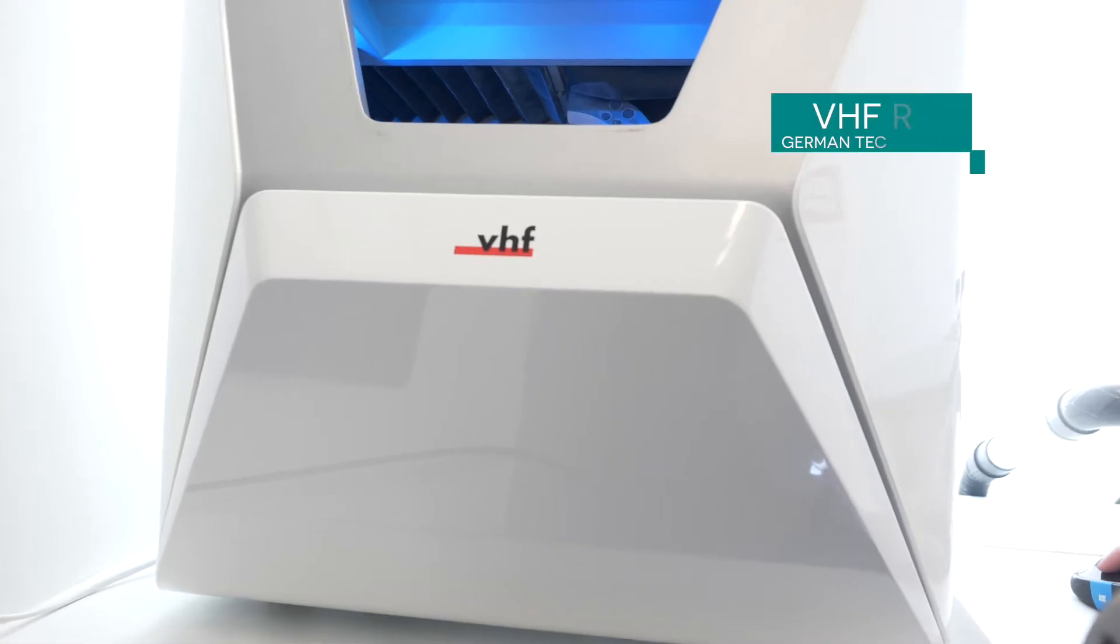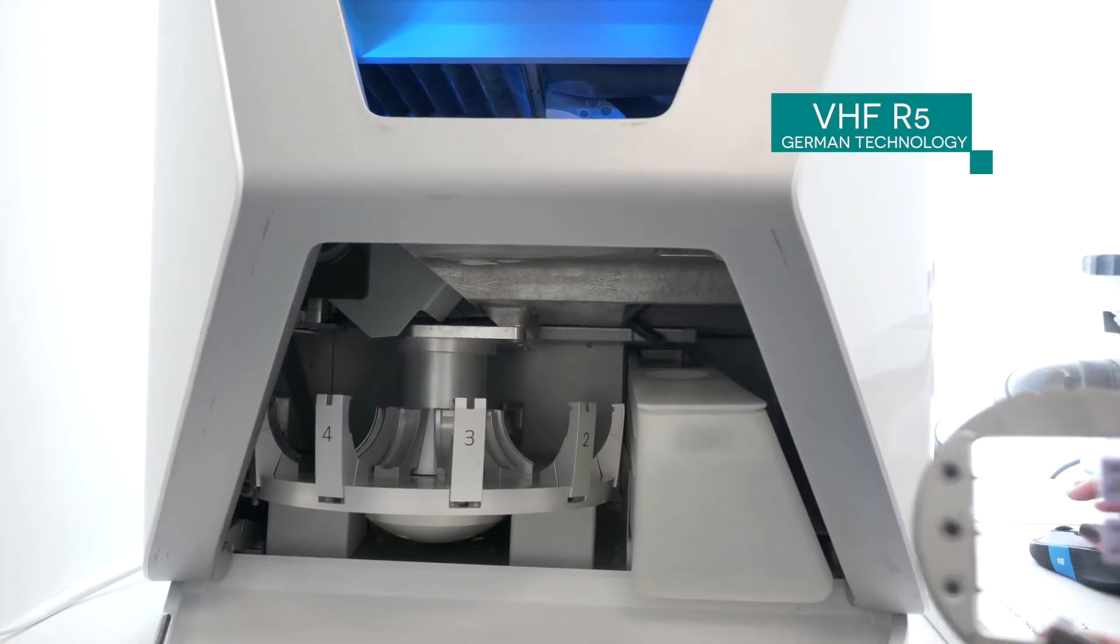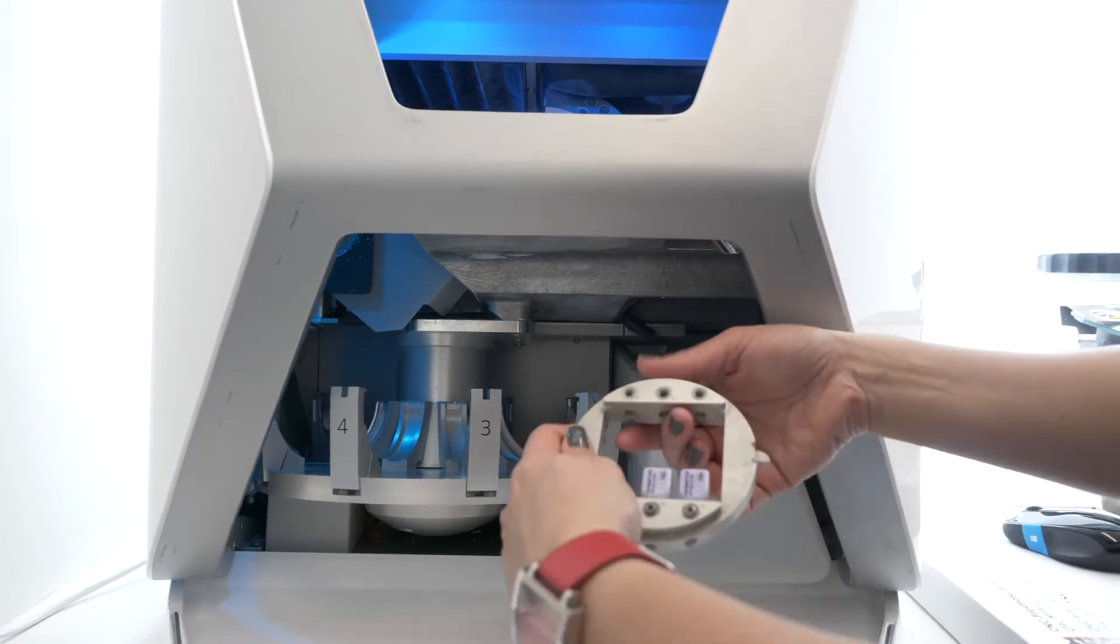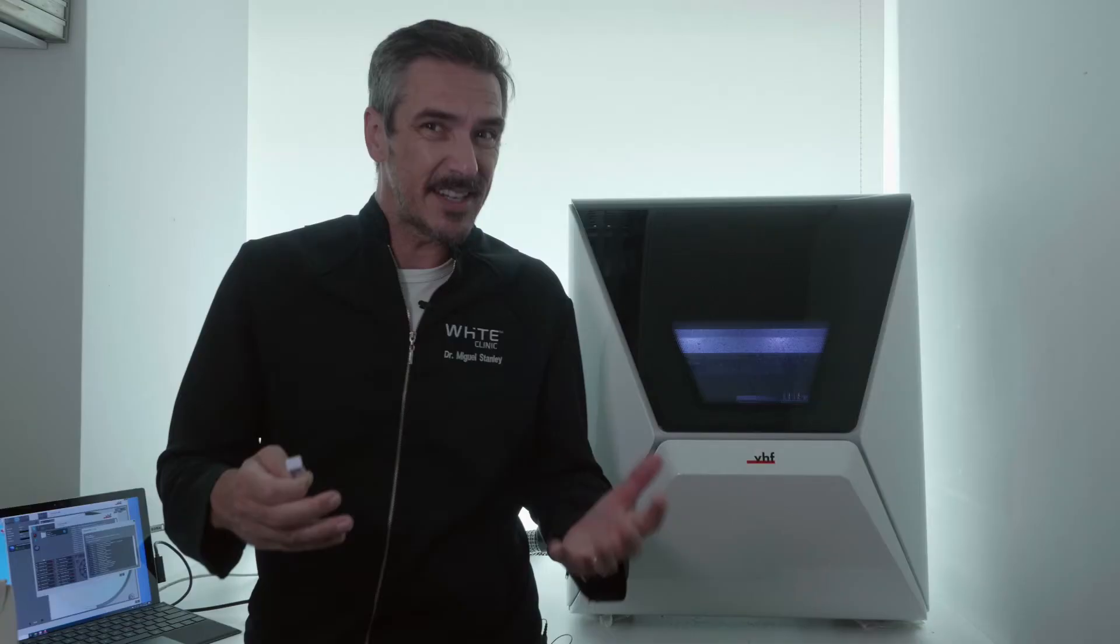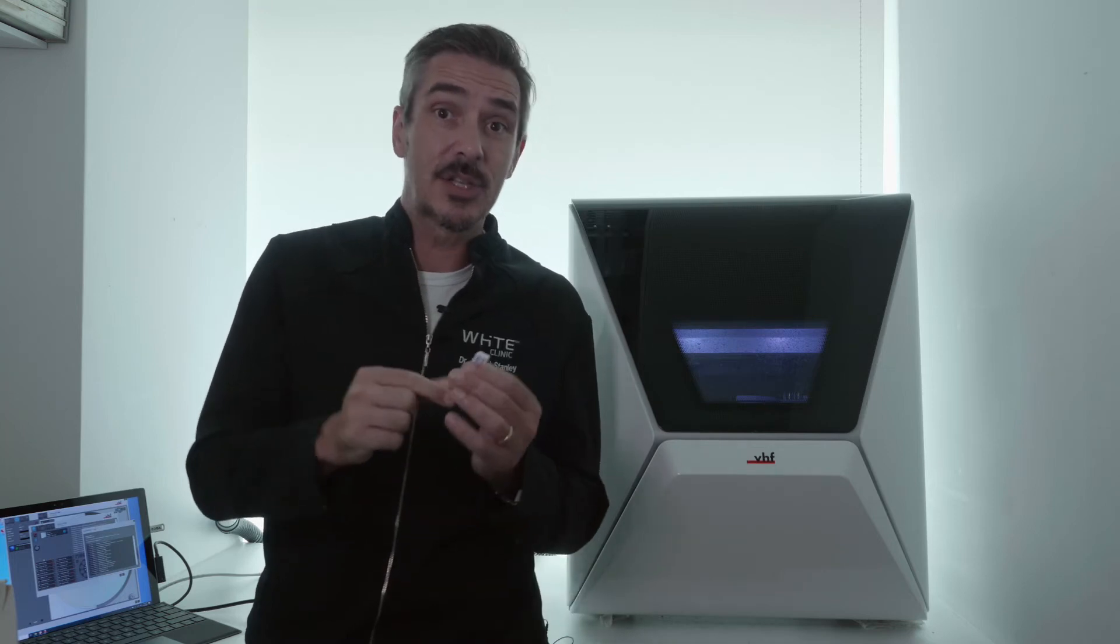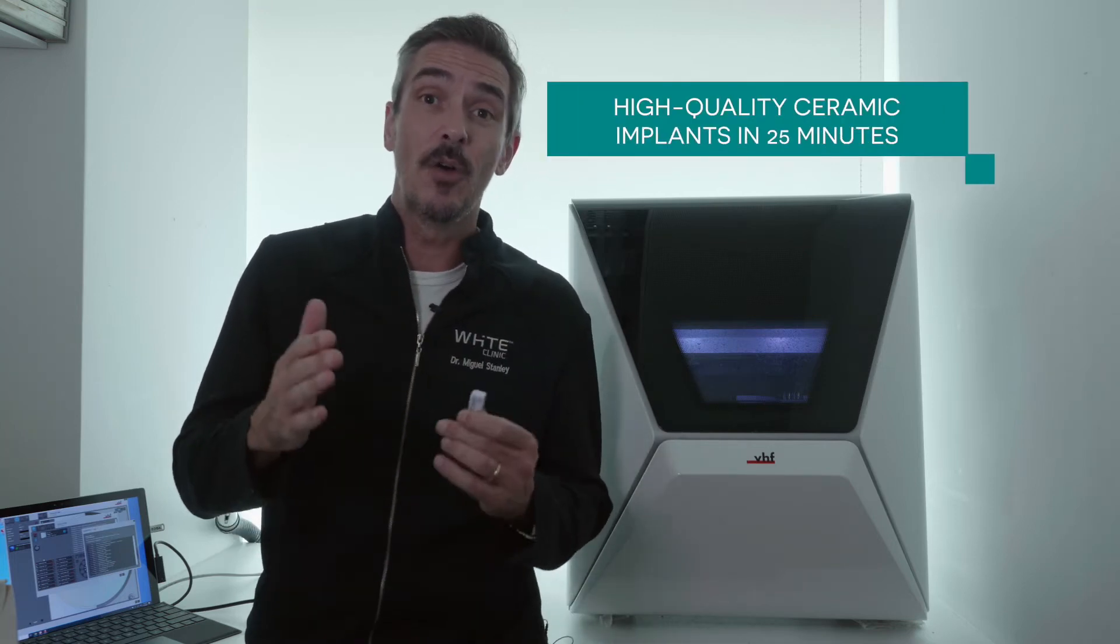This is the R5, a 5-axis milling machine manufactured in Germany by VHF. This really cool machine is technically a robot that can turn this little hardened block of ceramic into a beautiful tooth in only 25 minutes.